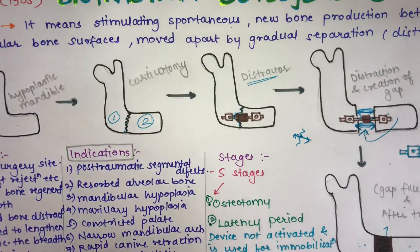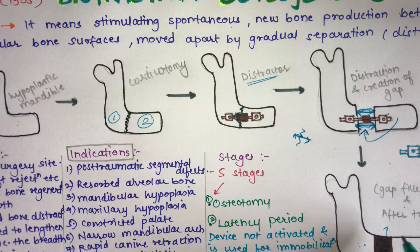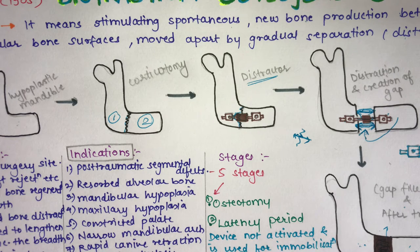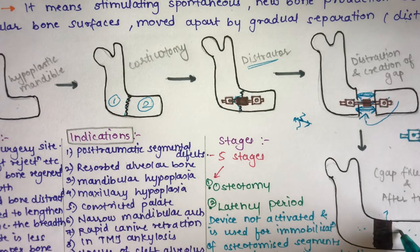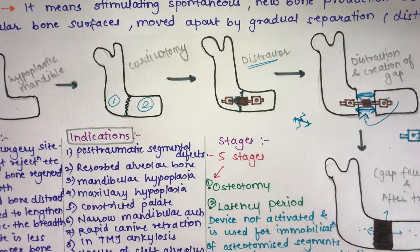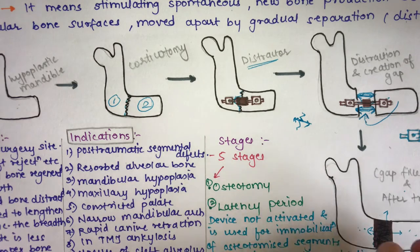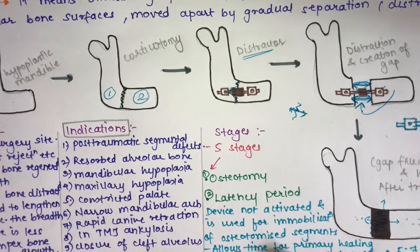In distraction osteogenesis, the gap created is filled with bone tissue because growth factors signal cells to form new bone. When the gap is created, the body triggers tissue to produce new cells to fill it. This is how new bone is formed in the gap, leading to an increase in the size of the hypoplastic bone.